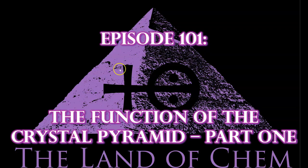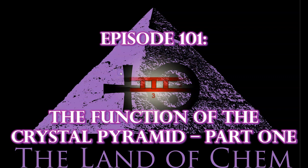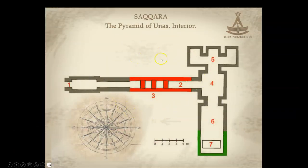Ladies and gentlemen, I think that is it for today's intro. So without further ado, let's get right to it. Here we go with tonight's episode, beginning with this diagram of the Crystal Pyramid, showing the internal components and indicating their composition, with the primary inlet shaft here made from limestone. This section of the structure with the three valves is made from red granite. The three reaction chambers here are also made from limestone.